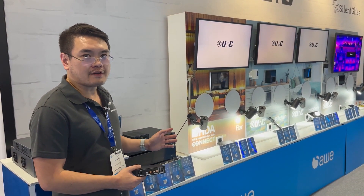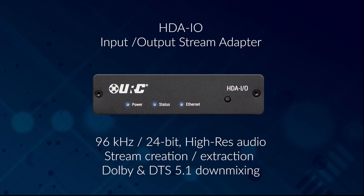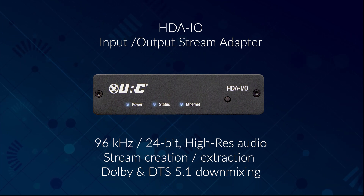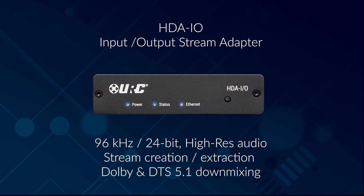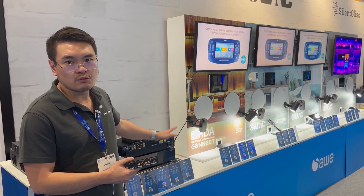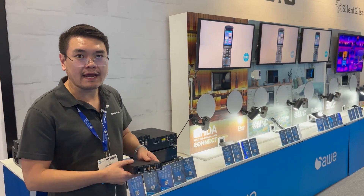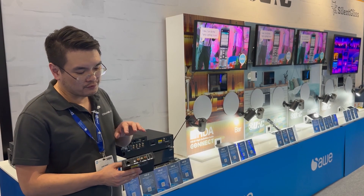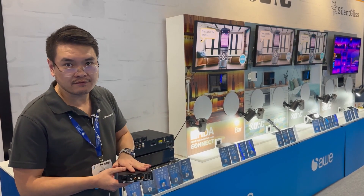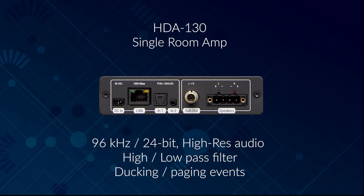On top of the distribution capability of the amplifier, you've also got the URC-HDA-IO. The HDA-IO allows you to stream your audio source from your amplifier to an AV receiver, so these 8 inputs will then be able to be outputted on your AVR. Conversely, you can also stream anything connected to the AVR to your amplifier through the zone output of your AVR into this device. If you have a 5.1 stream, this device will down-mix that stream to stereo and output it on the amplifier.